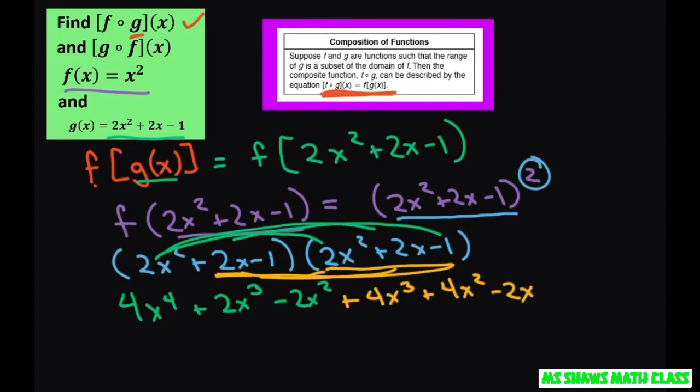And that's going to be plus 4x cubed plus 4x squared minus 2x. And finally, we're going to do the negative 1. So negative 1 times all of that, just negate everything. So that's going to be negative 2x squared minus 2x plus 1.